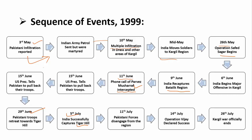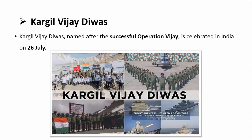Tiger Hill's recapture was a significant turning point. On 11th July, Pakistani forces started to disengage and pull out from the whole region. On 14th July, Operation Vijay was declared a success. And on 26th July, we celebrate Operation Vijay Divas, which is observed all across the country.